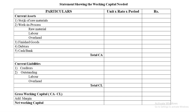Under current assets, remember there must be at least these five things: stock of raw material; work in process (which includes raw material, labor, and overheads); finished goods; debtors; and cash. These five items must appear in your current assets.